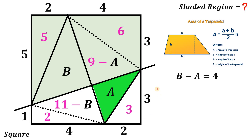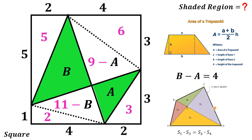If we use the area of the trapezoid in the bottom part, we get the same equation: B minus A equals 4. But we want another equation or relationship between A and B. To do that, we will use this concept: if we have a quadrilateral and connect its diagonals, we create four triangles with areas S1, S2, S3, and S4. The relationship is that S1 times S3 must equal S2 times S4. We will use this concept to create another equation containing A and B.